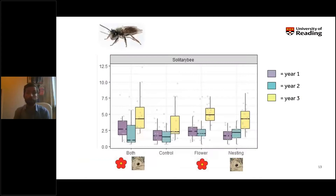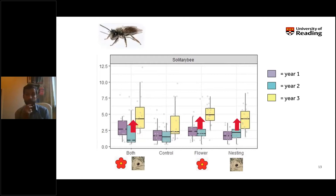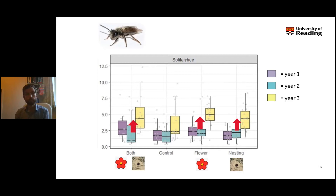We're crunching these numbers now. The figure shows the abundance and activity of solitary bees visiting apple flowers across these orchards over three years of the study. The numbers of solitary bees have increased over the period, but we see really significant increases particularly in orchards where habitats — either nesting or flowering — have been established. This is really encouraging and shows these habitats are supporting wild pollinators.